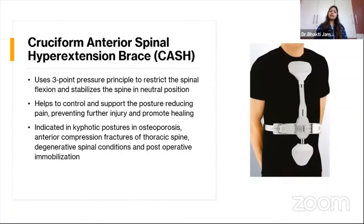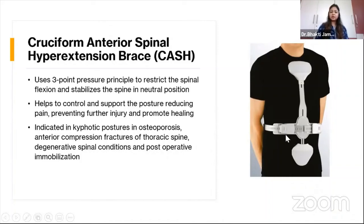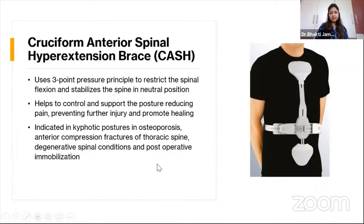Next is the cruciform anterior spinal hyperextension brace, also called the CASH brace. It works on a three-point pressure system, restricting spinal flexion and stabilizing the spine in a neutral position. It helps control and support posture of the spine, reducing pain and preventing further injury. It can be used for kyphotic postures in osteoporosis, anterior compression fractures, degenerative spinal conditions, and post-operative cases where flexion needs to be limited.